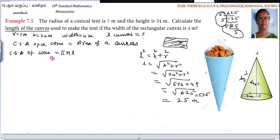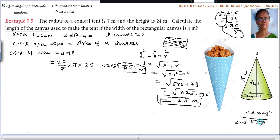L you found out. Now you will be able to find out the curved surface area of the cone. 22 by 7 in the place of pi. What is R? 7. What is L? 25. 7 and 7 get cancelled. 22 into 25, that is 550 meter square. This is one answer. 20 into 25 is 500, 2 into 25 is 50, so 550. Curved surface area of the cone.